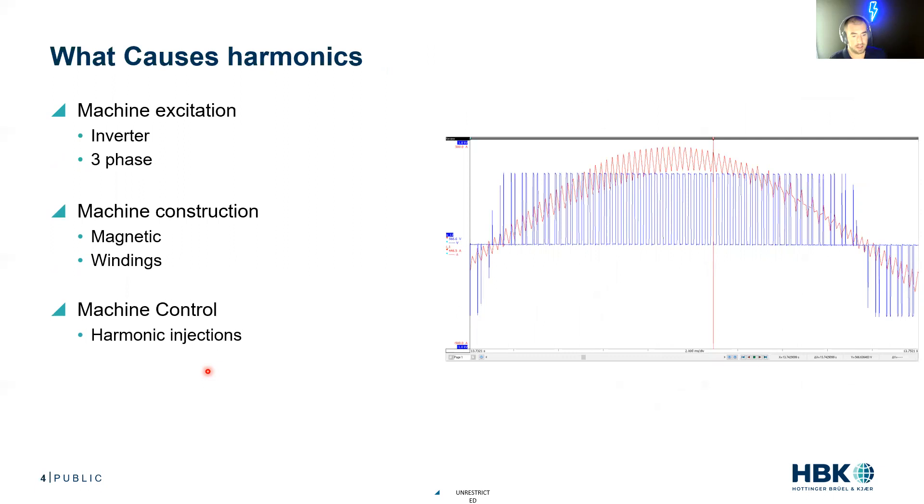So what causes harmonics? The machine excitation - this could be the standard three phase excitation or the inverter excitation. I love this example here. This is PWM voltage in blue and PWM current in red. We can see that our PWM coming out of that inverter has these little square waves. And what do we remember about square waves? That they cause all kinds of harmonics.